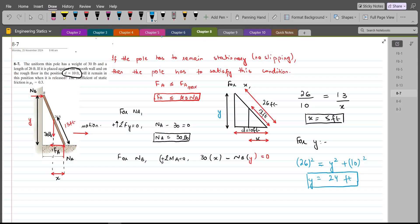So, these are the values for x and y. We can substitute it in our moments equation. So, our moments equation becomes 30 into x which is 5 feet minus Nb into y which is 24 feet equals to 0. So, from here Nb comes out to be 6.25 lbs.